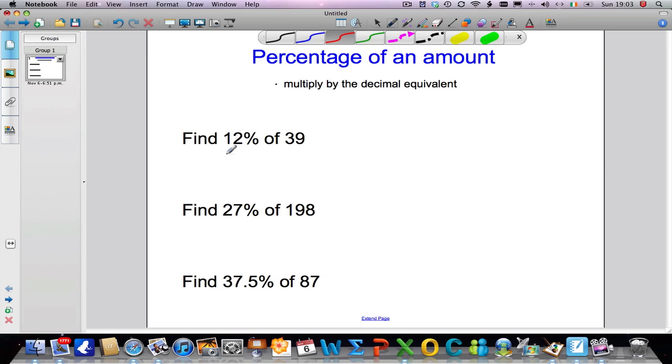So let's have a look. First question, I'm going to multiply 39, I want 12% of it. So I'm going to multiply by the decimal equivalent of 12% which is 0.12. So I work out what 12% is as a decimal and then I'm going to multiply that by 39. So it's going to be 39 times 0.12.